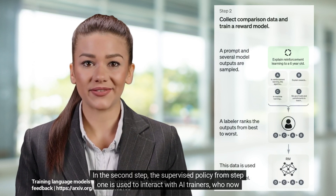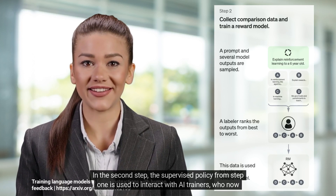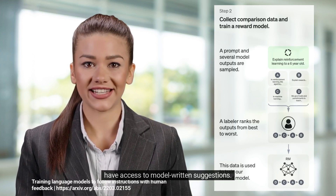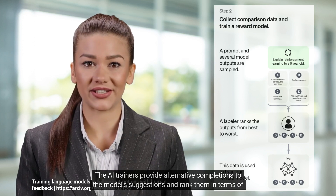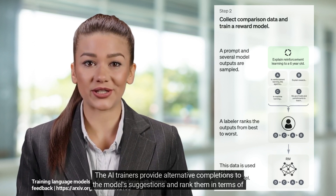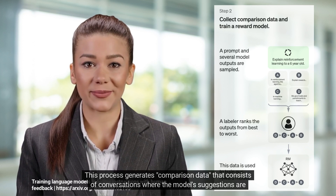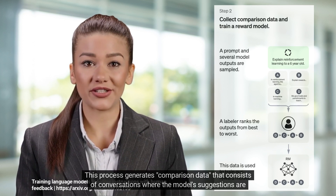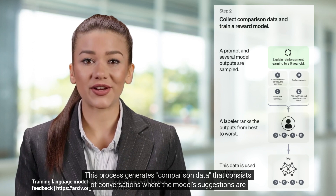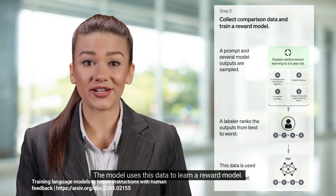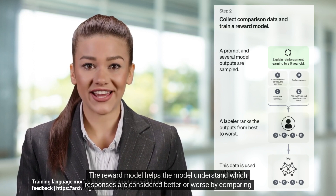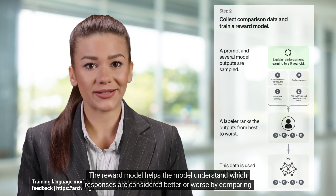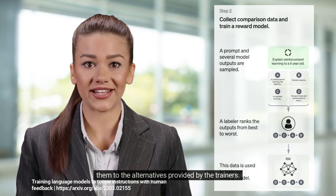In the second step, the supervised policy from step 1 is used to interact with AI trainers who now have access to model-written suggestions. The AI trainers provide alternative completions to the model's suggestions and rank them in terms of quality. This process generates comparison data that consists of conversations where the model's suggestions are ranked. The model uses this data to learn a reward model, which helps it understand which responses are considered better or worse.